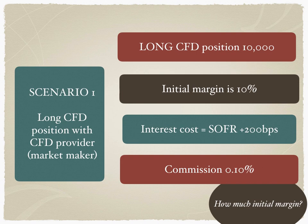To recap: the hedge fund has initiated a long CFD position. The initial margin deposited with the CFD provider is 10%, calculated as 10,000 × $10 × 10% = $10,000. The interest cost charged by the CFD provider is SOFR plus 200 basis points. The commission charged is 0.10%. Now let's see what happens when the hedge fund decides to close out the position.